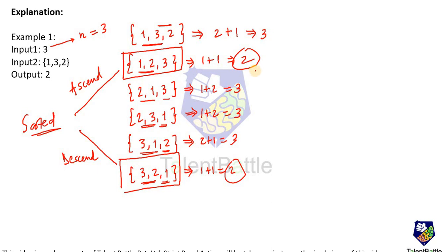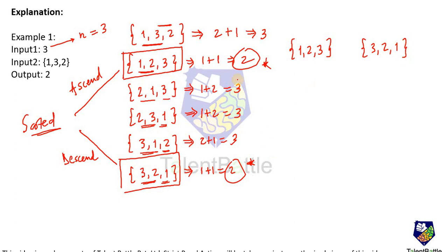Observing all arrangements confirms that the minimum penalty value occurs for sorted order of array elements — either ascending [1, 2, 3] or descending [3, 2, 1]. All other arrangements give a value of 3, but 2 is the minimum. So our approach is clear: sorting the array gives us the arrangement with minimum penalty.